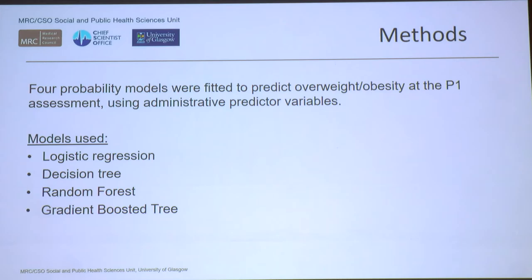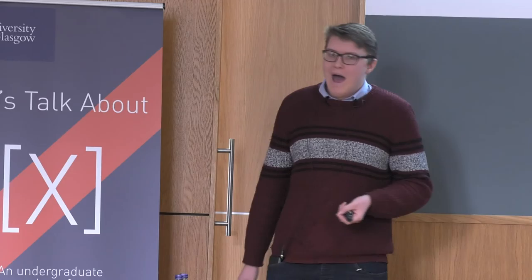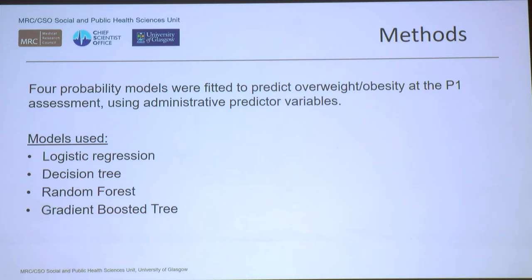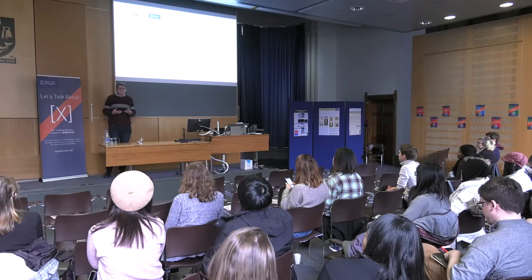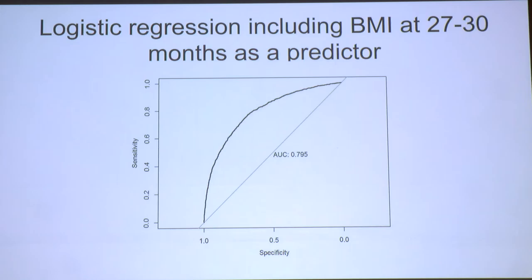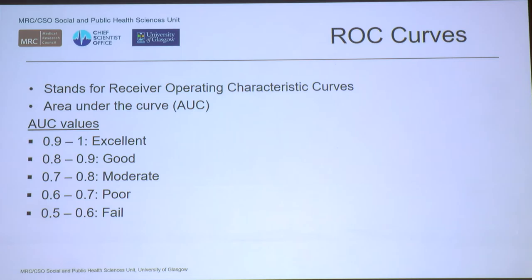The models we built are called probability models. There are four different types, all working differently, but in layman's terms they take the screening variables, apply different mathematical equations, and the output is a probability of an individual child being overweight at five years old. The four models are: logistic regression, decision tree, random forest, and gradient boosted trees. We then had to analyze how effective those models are at prediction. They all produce something called a receiver operating characteristic curve, or ROC curve.